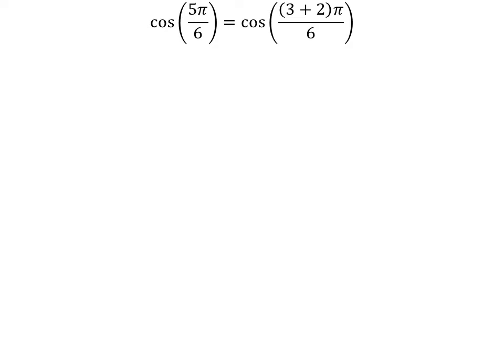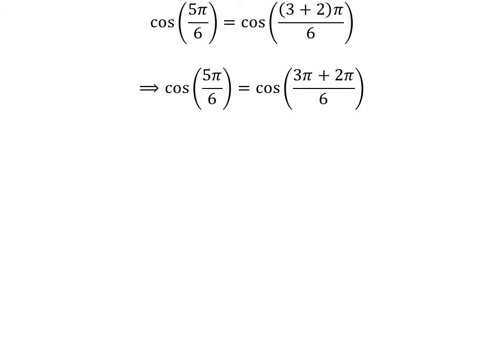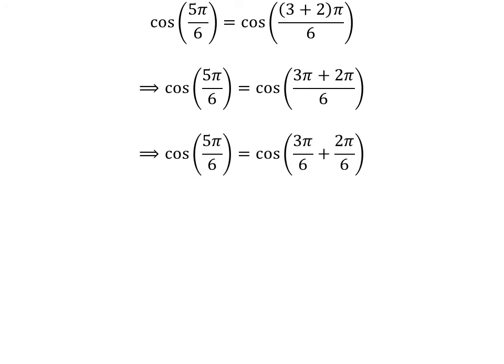Here is the second method. We know 3 plus 2 is equal to 5, so cosine of 5 times pi upon 6 is equal to cosine of 3 plus 2 times pi upon 6. Expanding the numerator, we get cosine of 5 times pi upon 6 is equal to cosine of 3 times pi plus 2 times pi upon 6. The fraction 5 times pi upon 6 can be expressed as the sum of two fractions: 3 times pi upon 6 and 2 times pi upon 6.